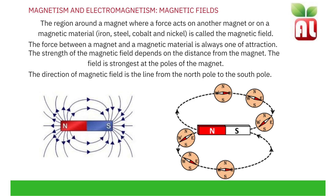The strength of the magnetic field depends on the distance from the magnet. The field is strongest at the poles of the magnet. Permanent magnets have a north and a south pole, and the direction of the magnetic field is the line from the north to the south.